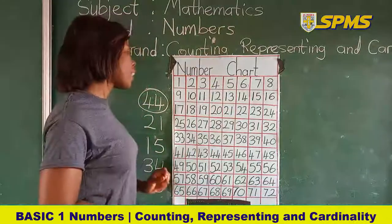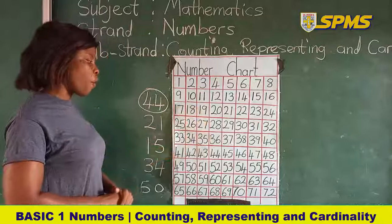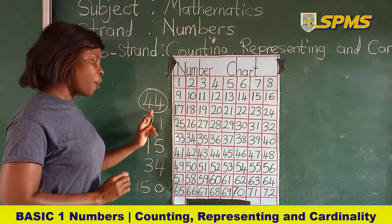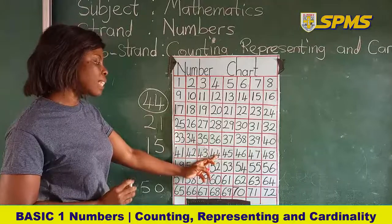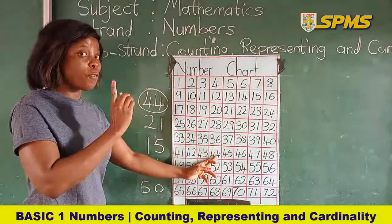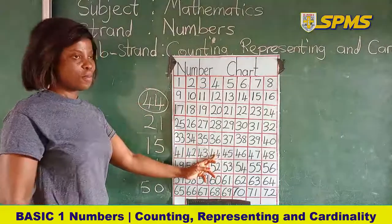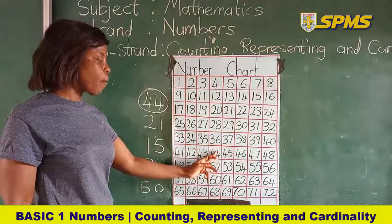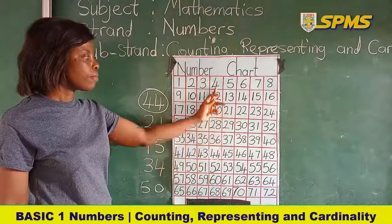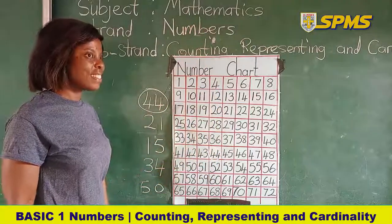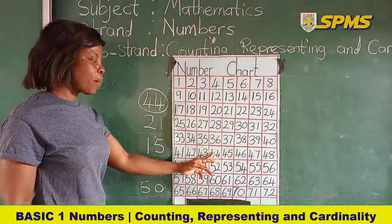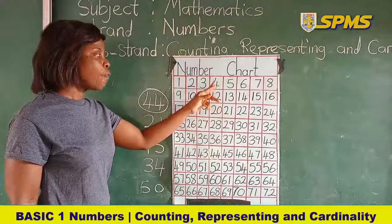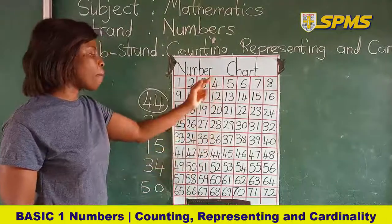Let's continue with 44 on the number chart. The numbers that are above 44 are 36, 28, 20, 12, and 4. Those are the numbers directly above 44.